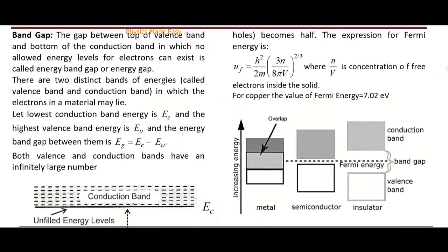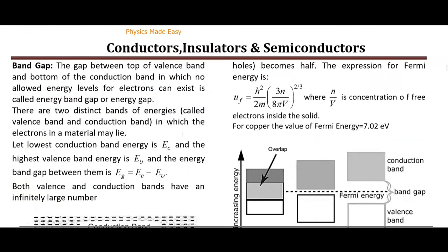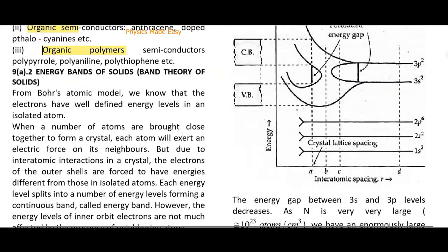Now we move to band theory. In atoms, we have electronic energy levels in orbits. When two atoms are brought closer together, their outer shells and outer orbits intermingle to form bands, while interior orbits remain as discrete levels.